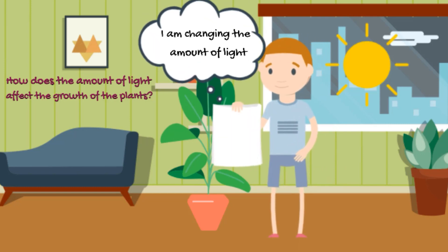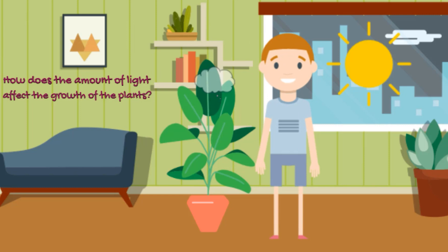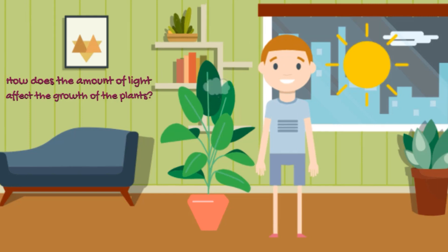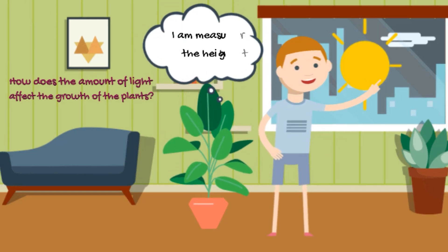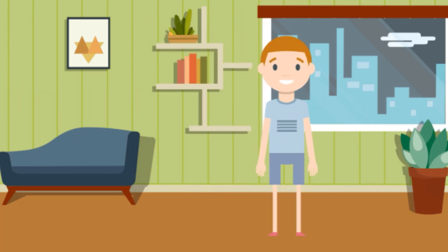The next type of variable we have is your dependent variable. Dependent variable is what is being measured. So in that example, how does the amount of light affect the growth of a plant? You are measuring how far or how tall the plant will grow. So your dependent variable is your growth of plant.